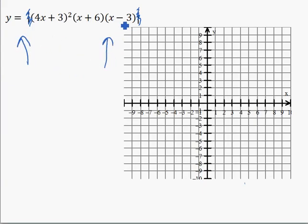And it's going to go through the zeros. The zeros are 3 from this one, so it has to go through 3, negative 6 from this factor, and this factor here will equal 0 at negative 3 fourths, which is right about here.